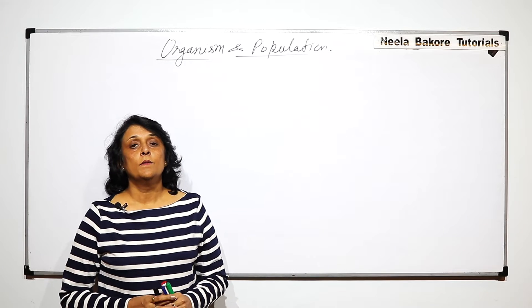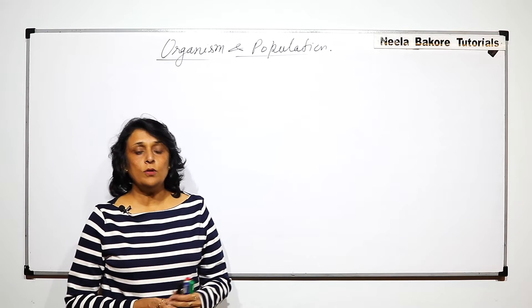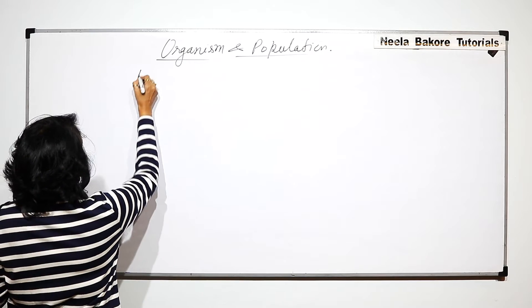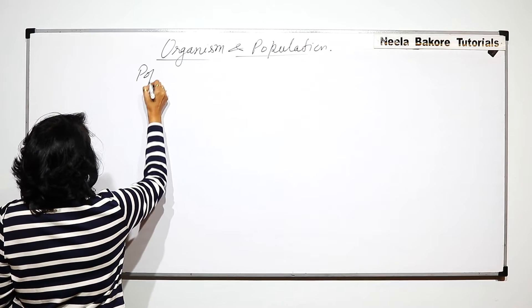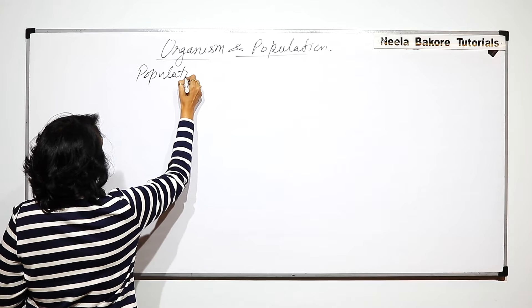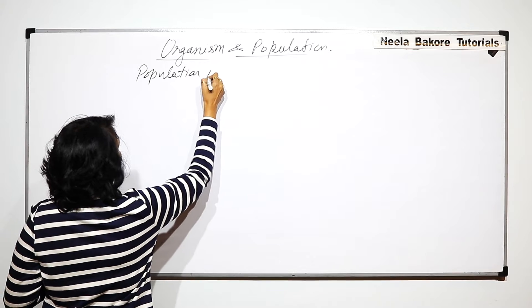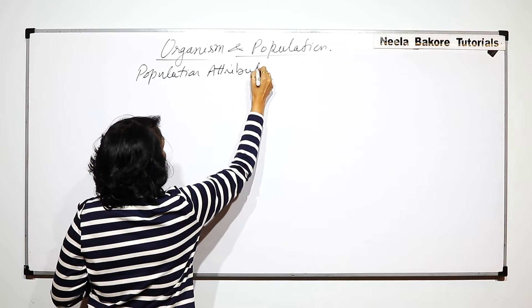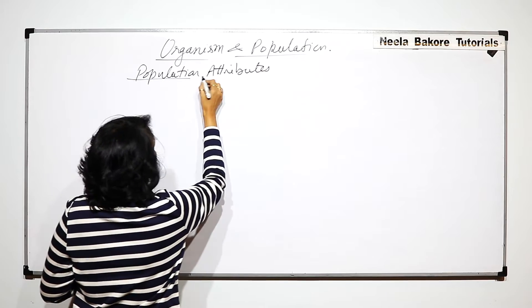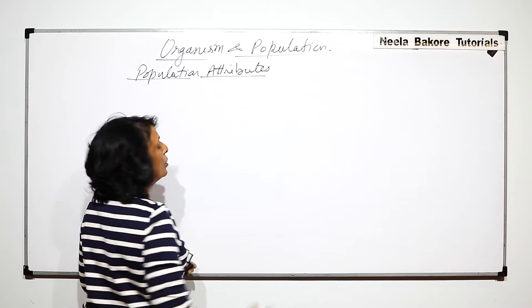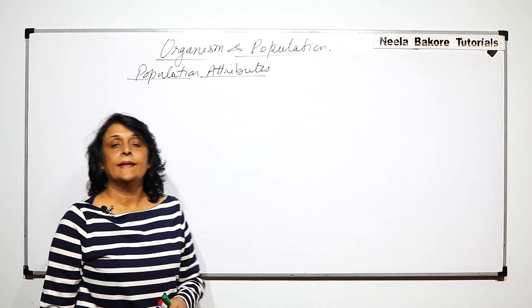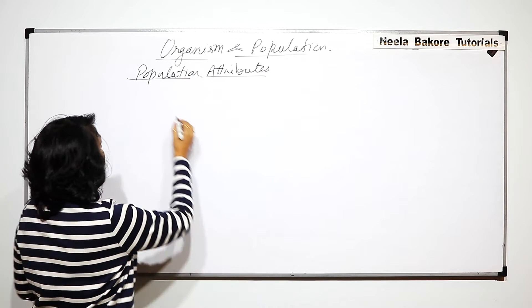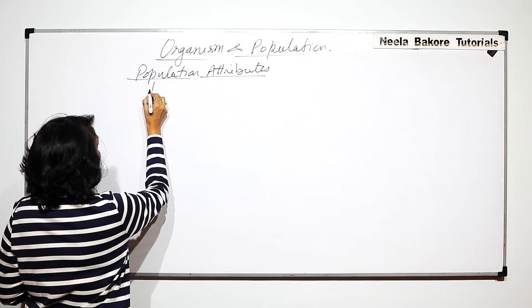In this part we will talk about population attributes. There are two words: one is population and the second is attribute. What exactly do we mean by population?